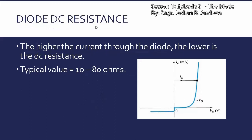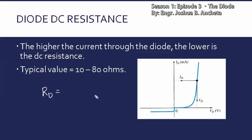Meron din tayong tinatawag na diode DC resistance. So the higher the current through the diode, the lower is the DC resistance. The typical value of this DC resistance is 10 to 80 ohms. So from this graph, you can solve the DC resistance. We represent this DC resistance as capital RD, and this is simply from this graph — kuha ka ng isang point dyan, identify mo yung VD tsaka ID, gamit lang tayo rito ng Ohm's law.